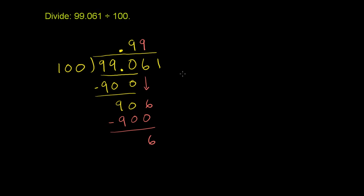And then we bring down the 1. We can bring down that 1. 100 goes into 61. It doesn't. It goes into it 0 times. 0 times 100 is 0. And then when you subtract, you have a remainder of 61.